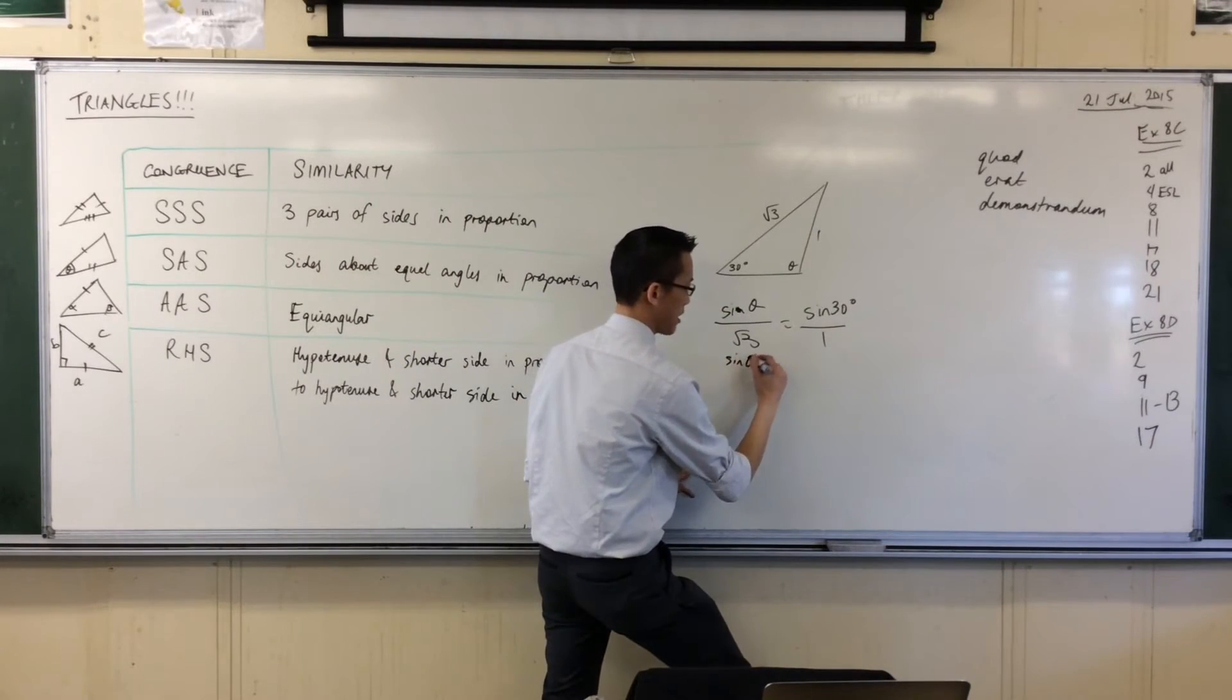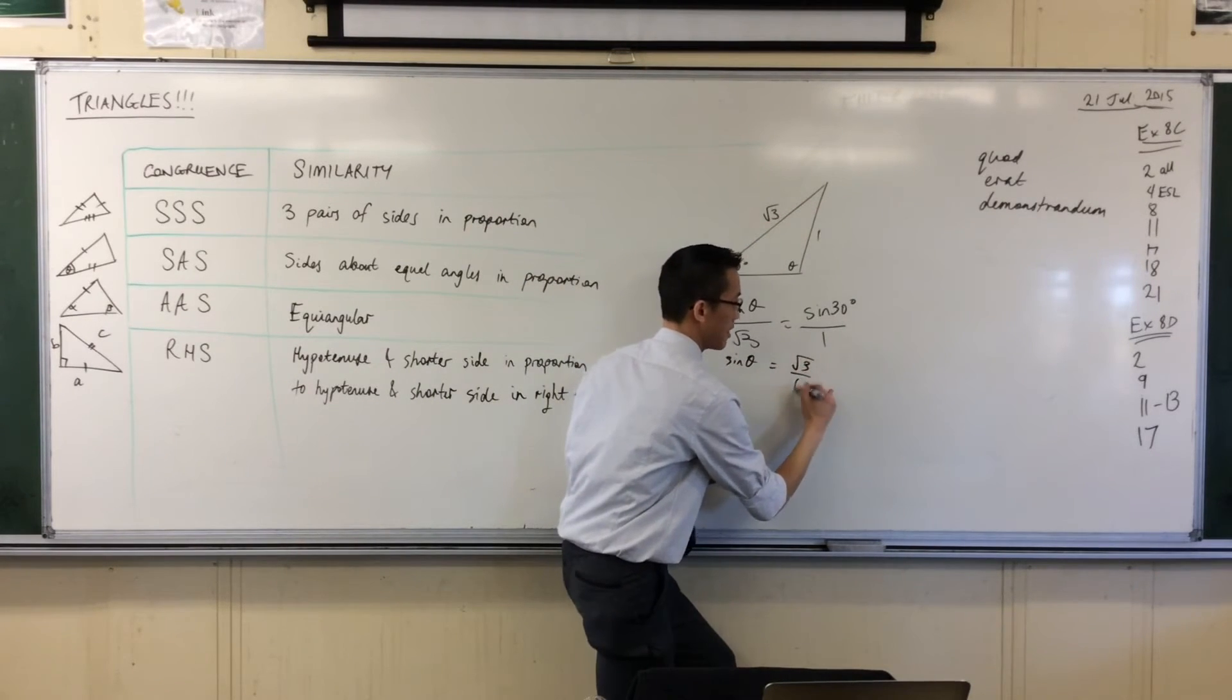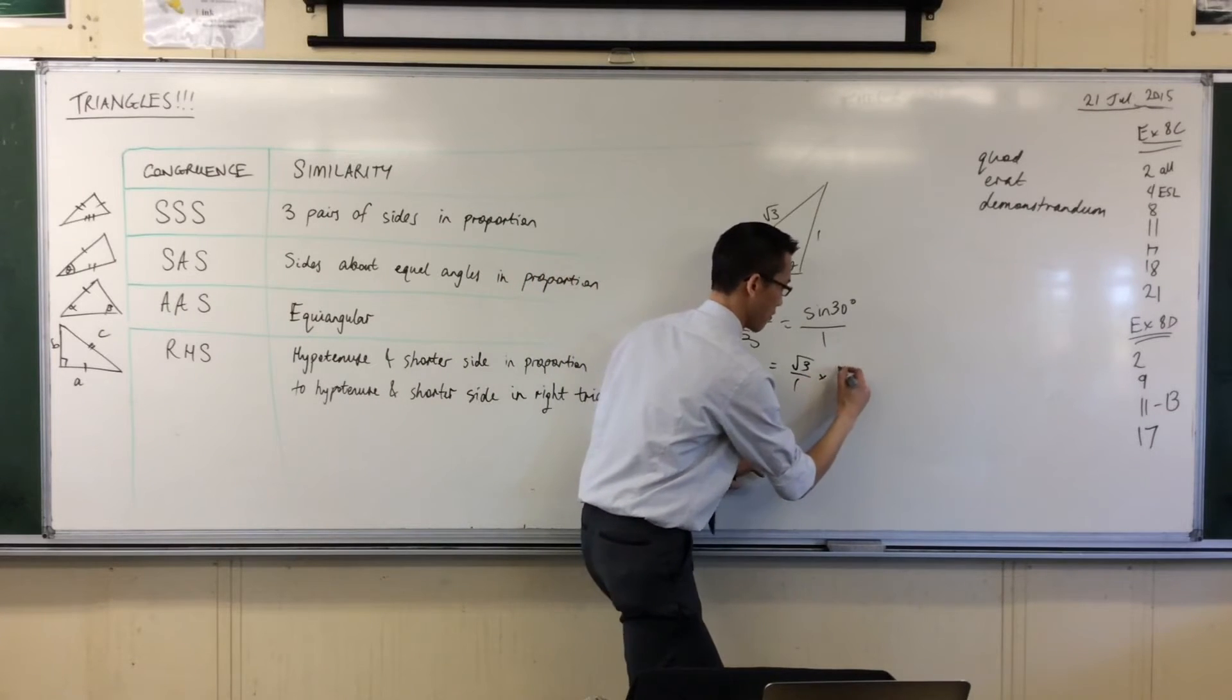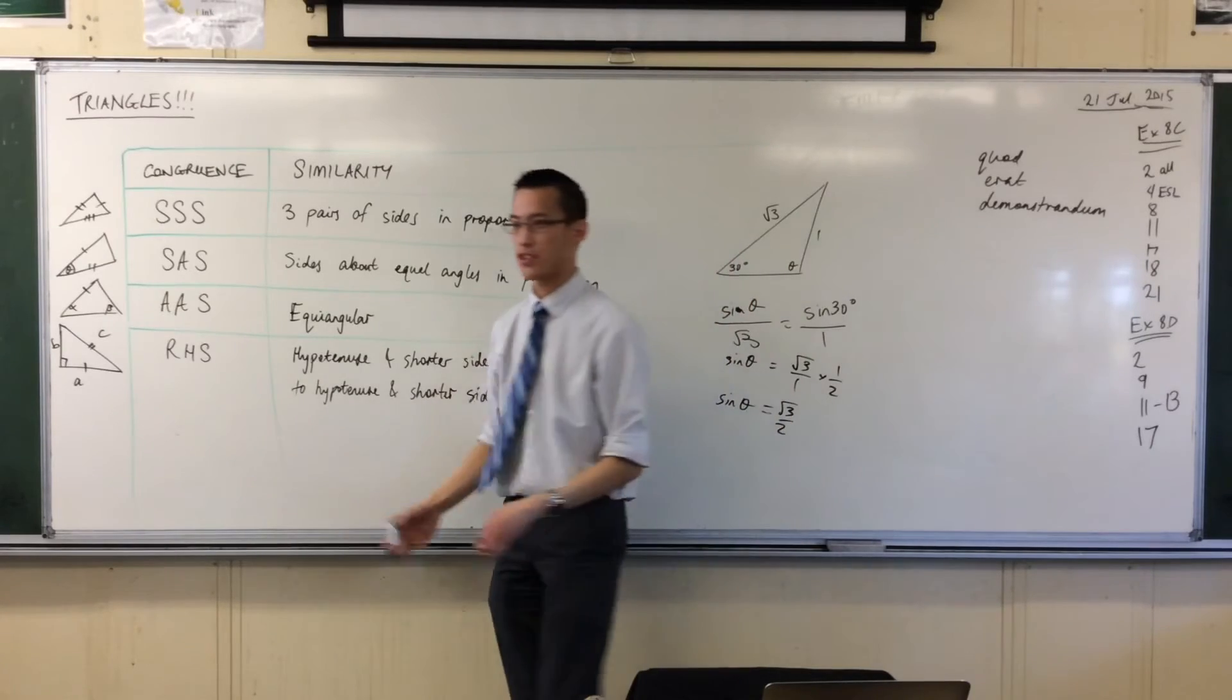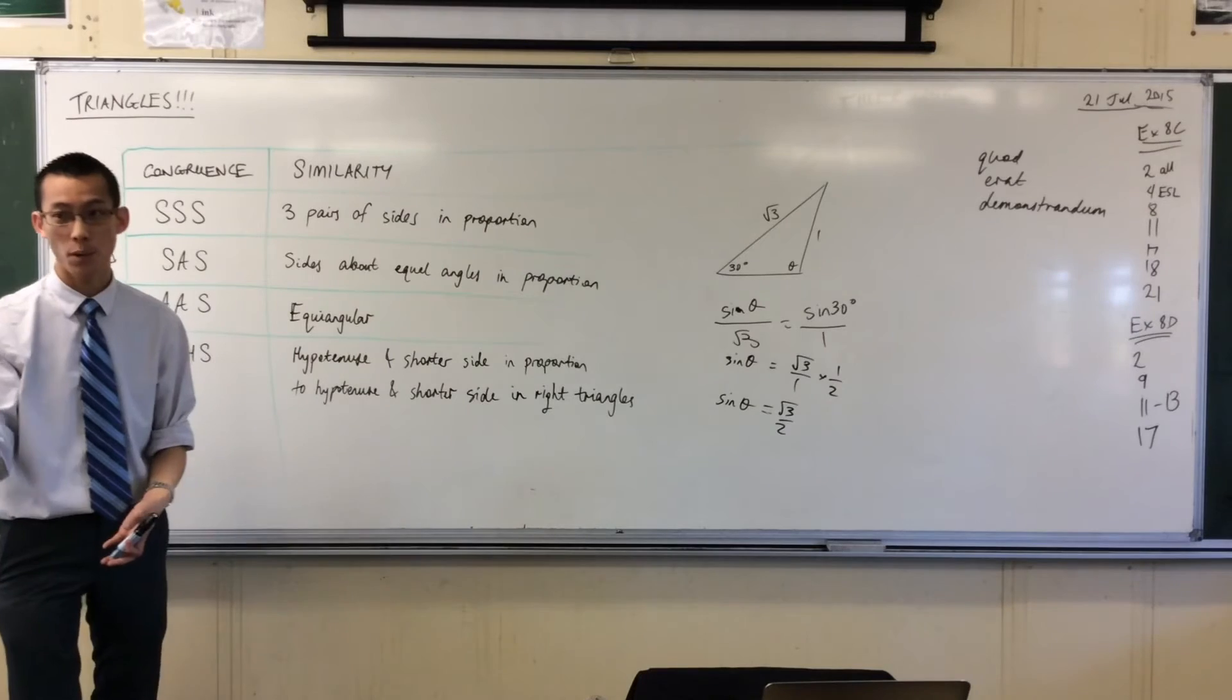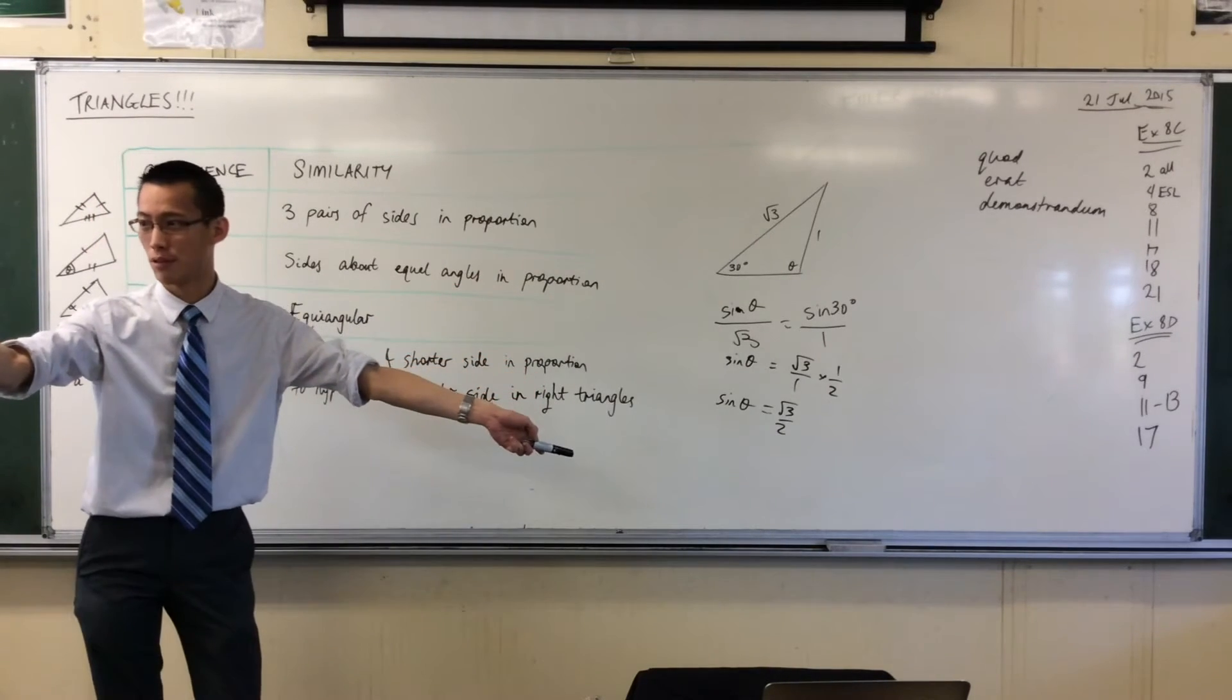So I've got sine theta over here. Root 3 is going to go over. And then sine 30 of course is half. So what I've got over here is root 3 on 2, okay? But you have been trained to avoid the sine rule and use the cosine rule wherever you possibly can, because at this point, you have to be careful. You have to say what?